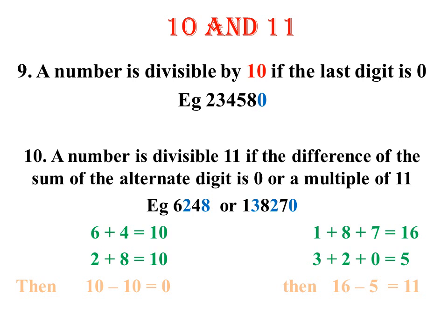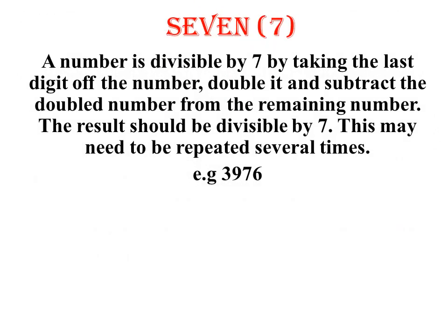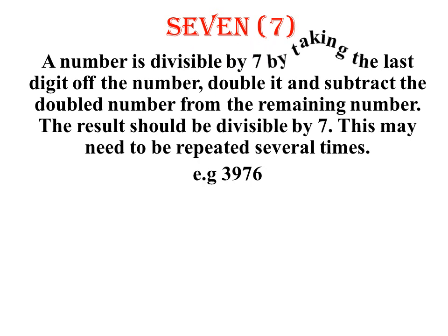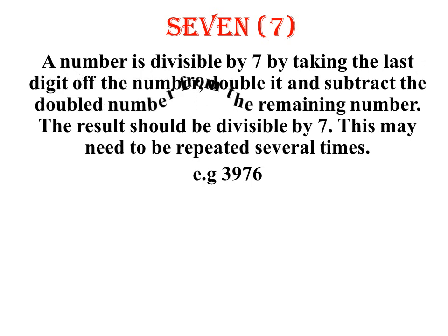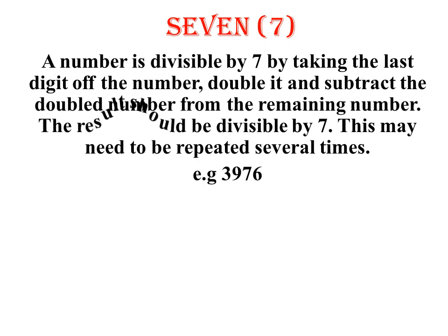That marks the end, although I had made a promise to take you through divisibility by 7. A number is divisible by 7 by taking the last digit off the number, doubling it, and subtracting the doubled number from the remaining number. The result should be divisible by 7.